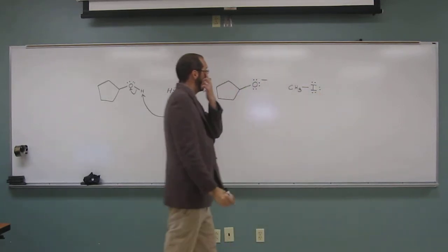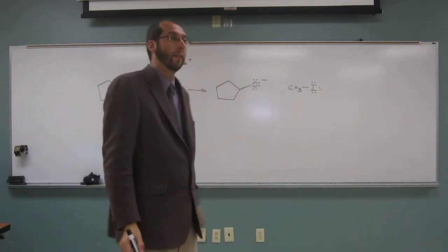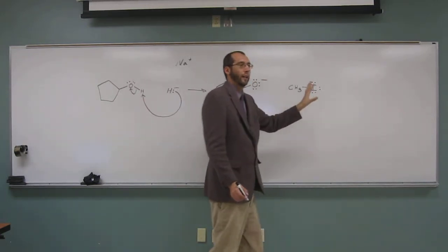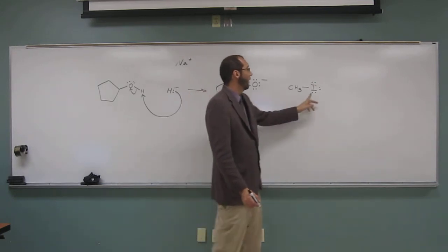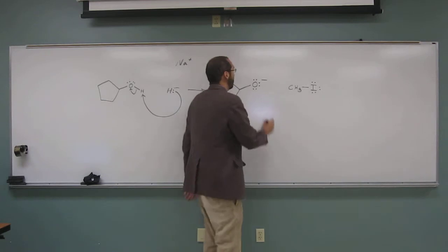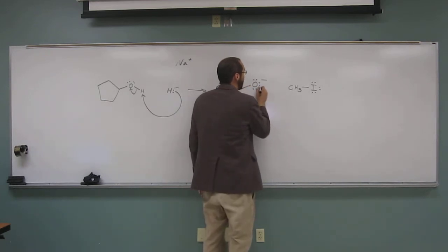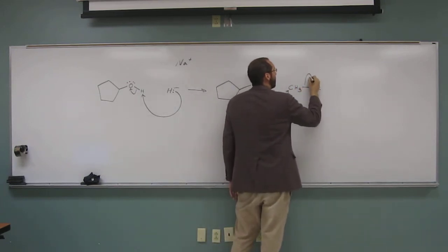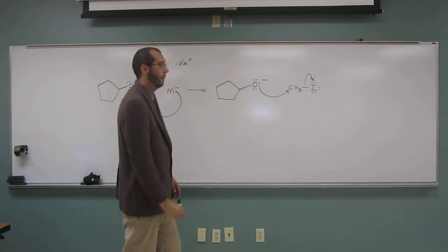Of course, this is a primary alkyl halide, well, it's a methyl alkyl halide, so even more reactive than a primary, with a really good leaving group. Remember iodine is the best of the halogens to be a leaving group. So what's going to happen? Very good. The SN2 reaction. Just like that. We can even write SN2 to remind us.